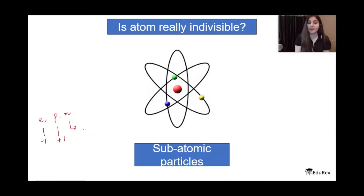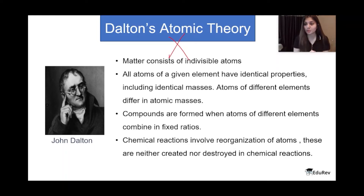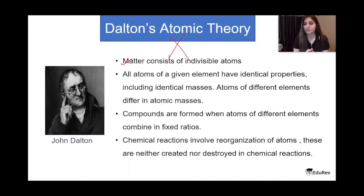There was a scientist named John Dalton who gave a beautiful theory called Dalton's Atomic Theory. This theory was rejected. The first point says that matter consists of indivisible atoms — again, we know that's not true. Matter consists of quite divisible atoms, and those atoms are divisible into subatomic particles. That's why the theory was rejected — a bad day for John Dalton.